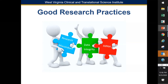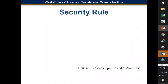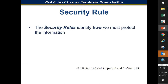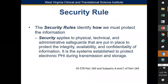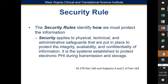There is a security rule — the reference is 45 CFR Part 160, Parts A and C, and also Part 164. The security rules identify how we must protect information. Security applies to physical, technical, and administrative safeguards that are put in place to protect the integrity, availability, and confidentiality of information — specifically the systems established to protect electronic PHI during transmission and storage.